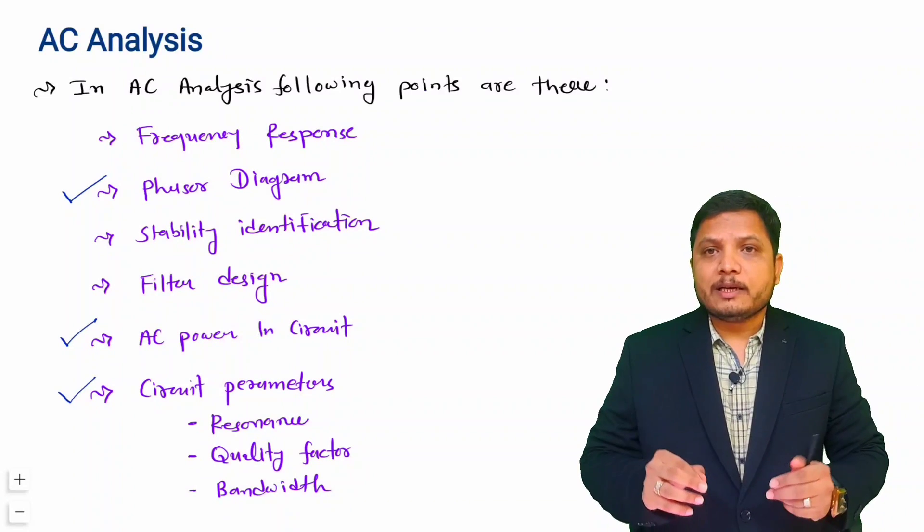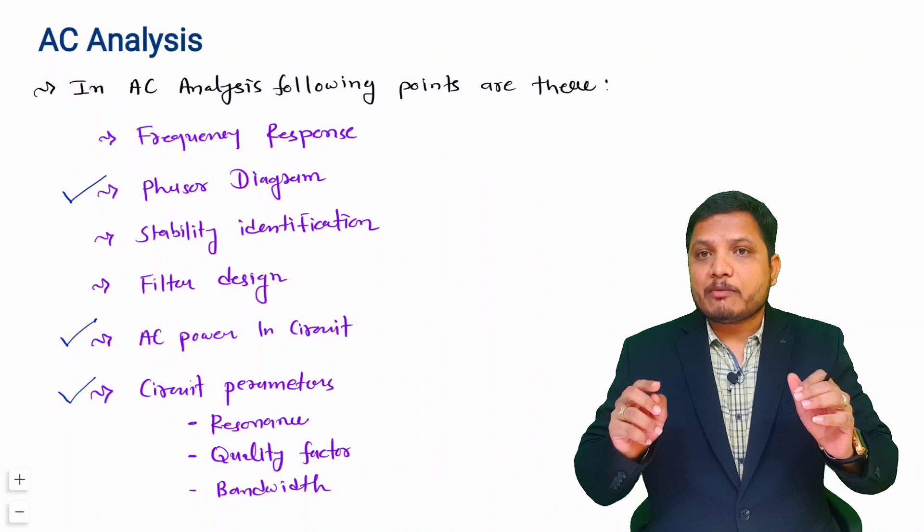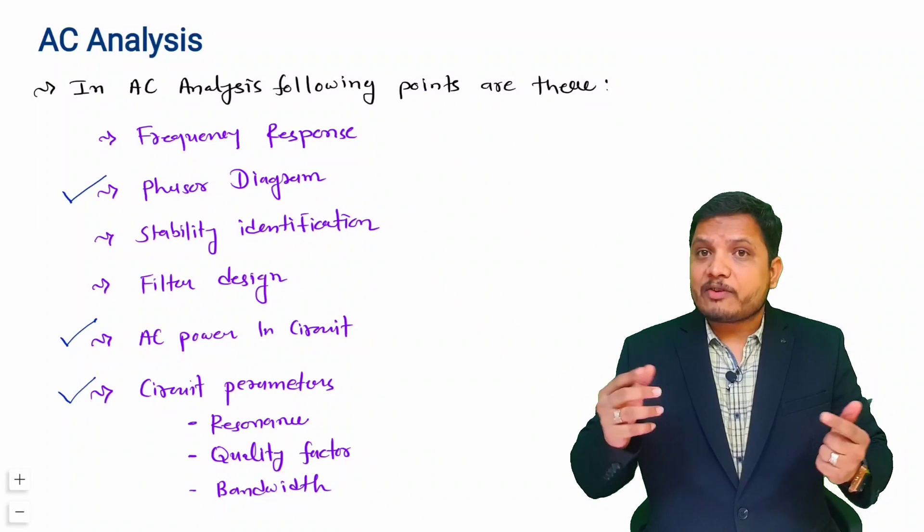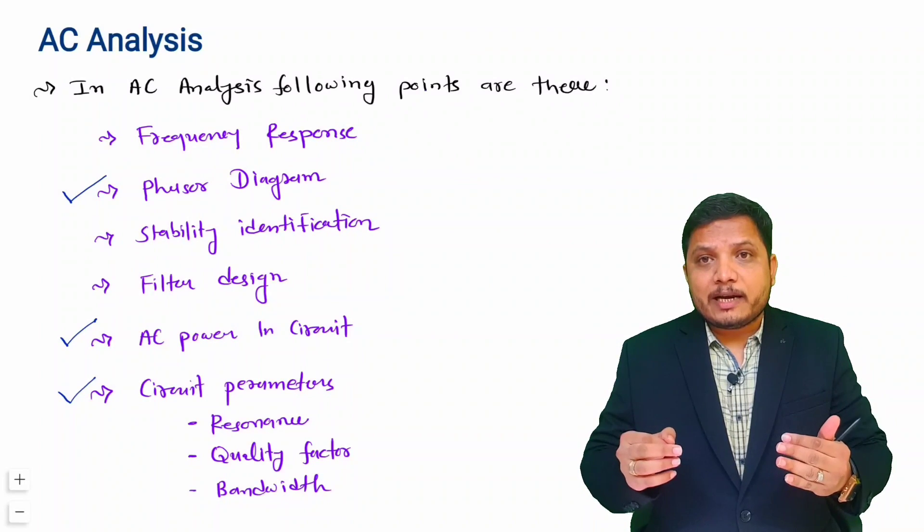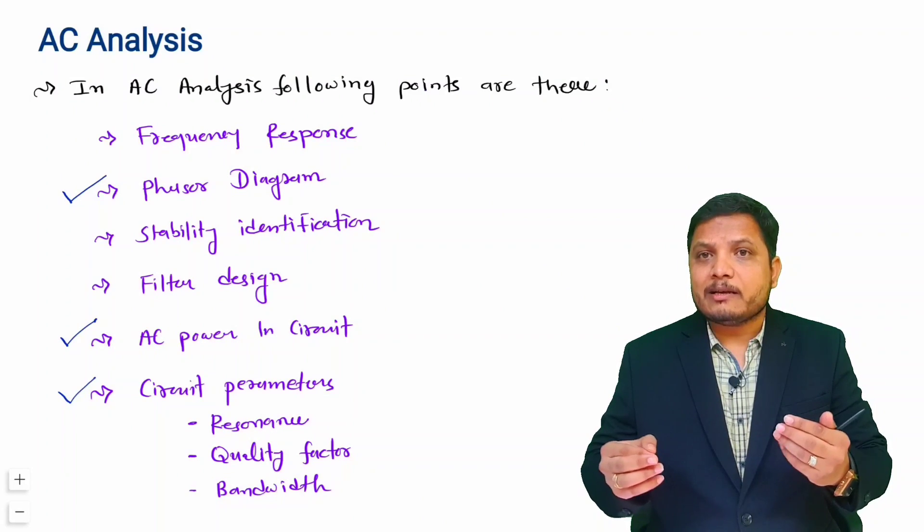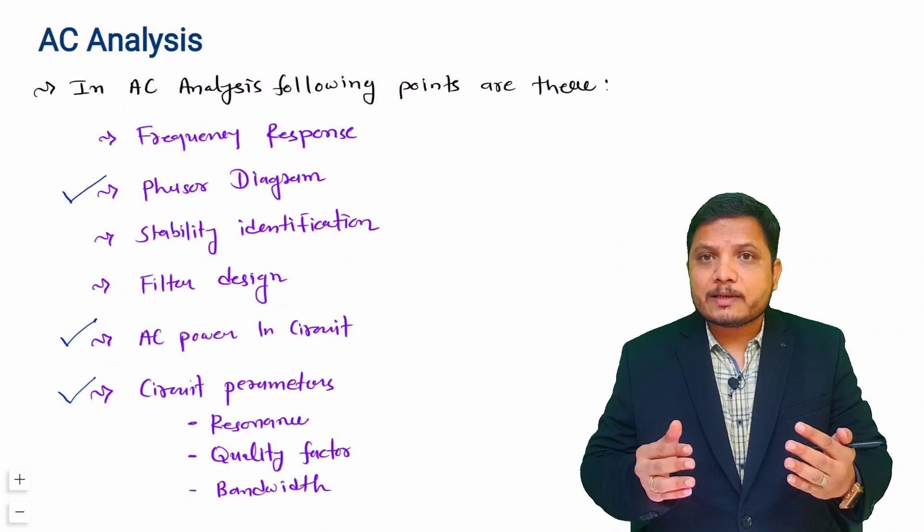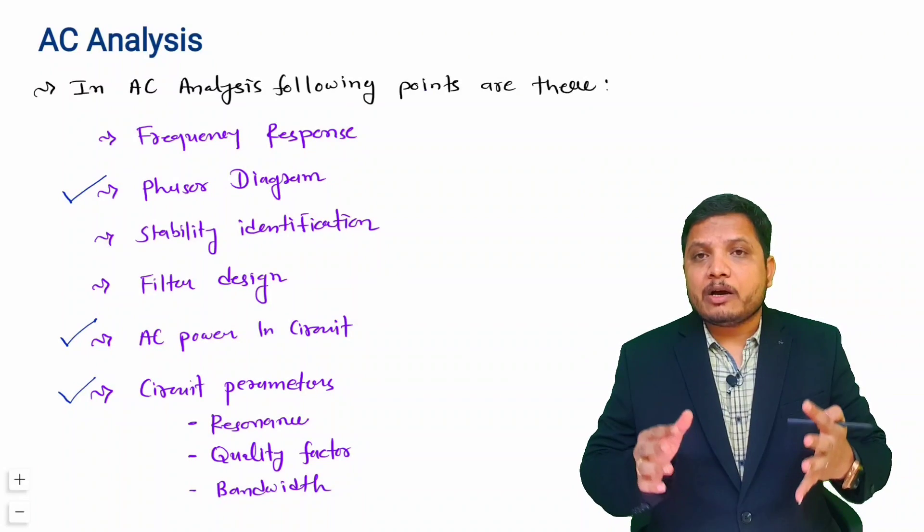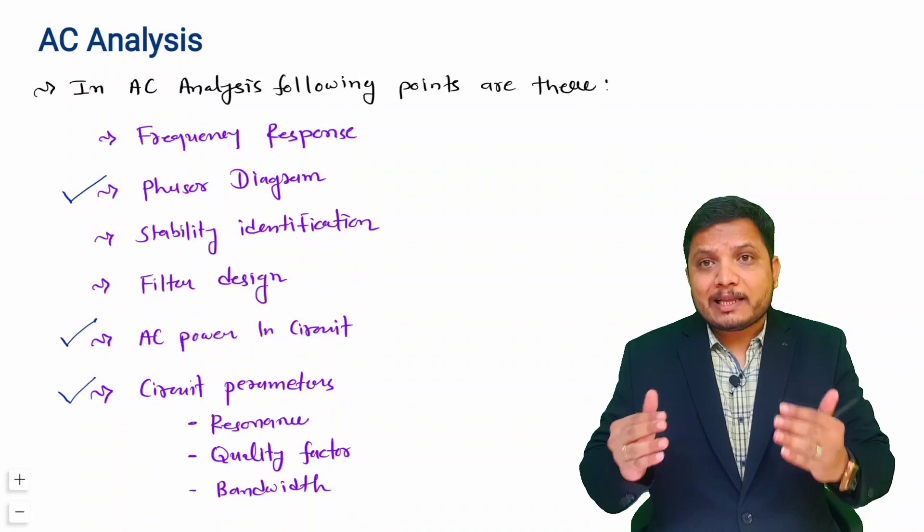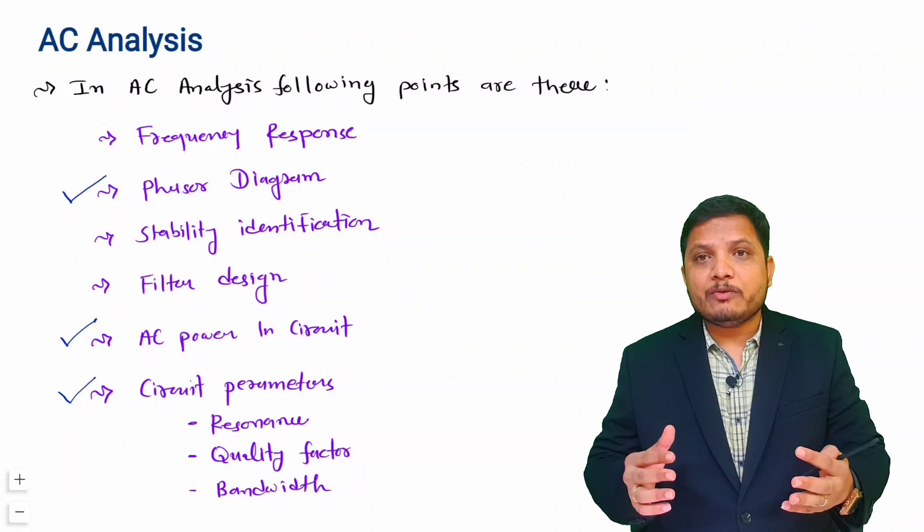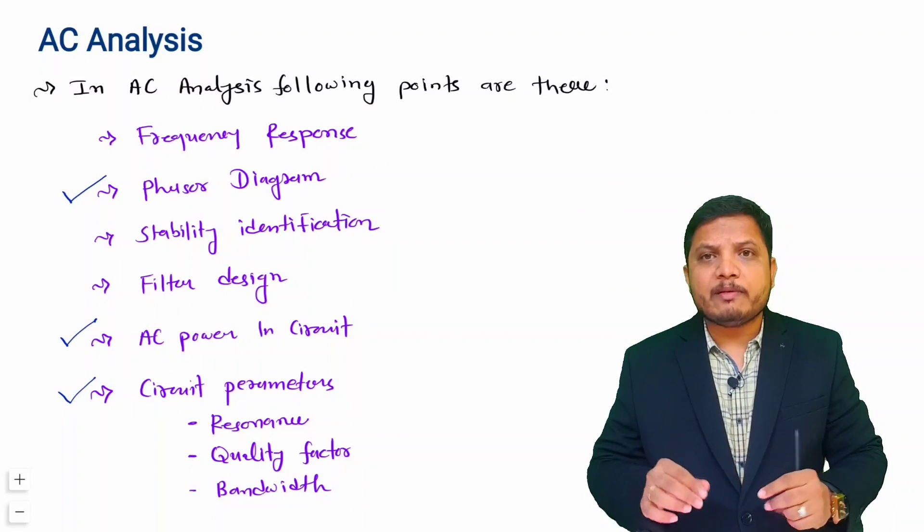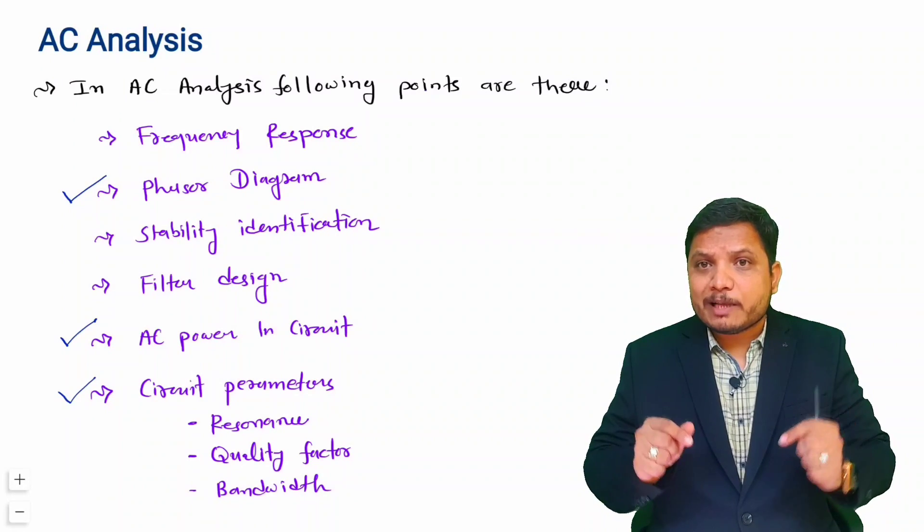So here there are many points in AC analysis, but with this playlist I will explain how phasor diagram is there in RLC circuit. After that, I will explain how we need to understand basic circuit parameters for series RLC and parallel RLC circuit, and for that we will try to understand what is resonance, what is quality factor, and what is the bandwidth of that RLC circuit. And after that, I will explain how power is analyzed in electrical circuit. So for that, I will explain how active power, reactive power, complex power, and total power is there with circuit. So everything we will be studying regarding these three topics in this playlist of network theory.